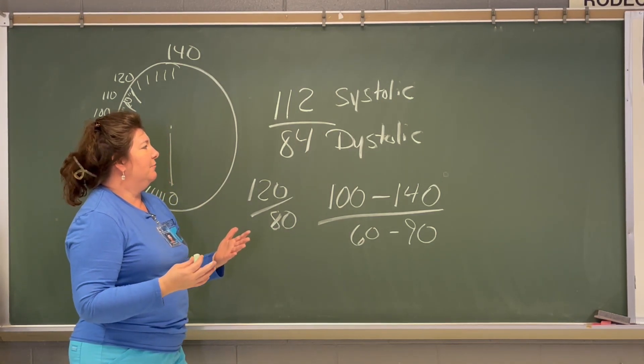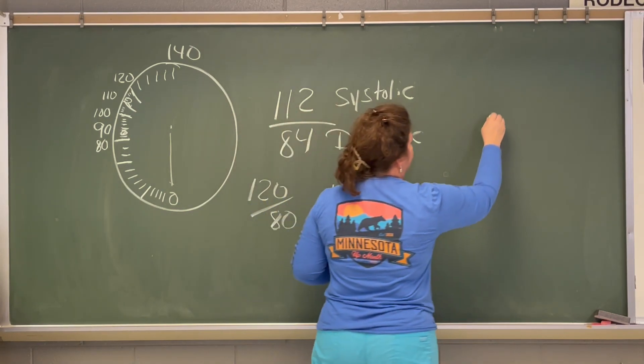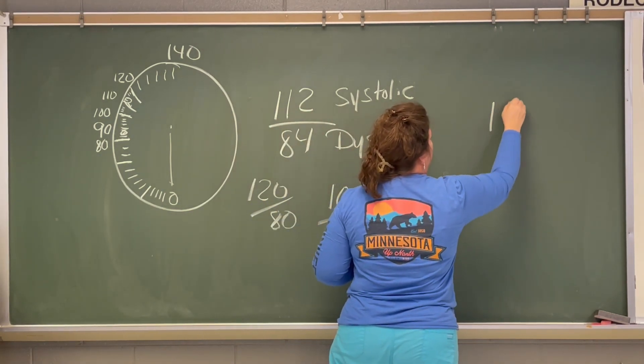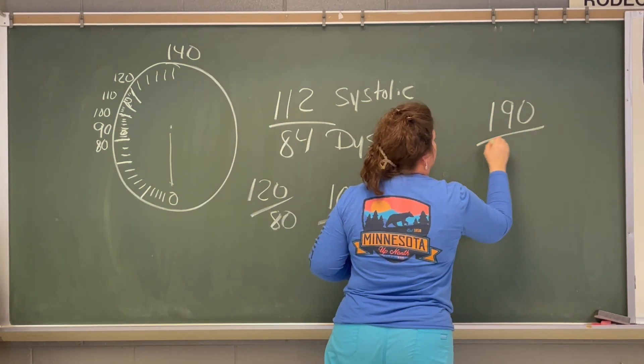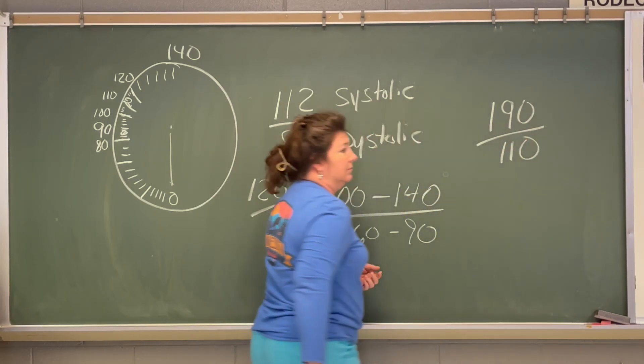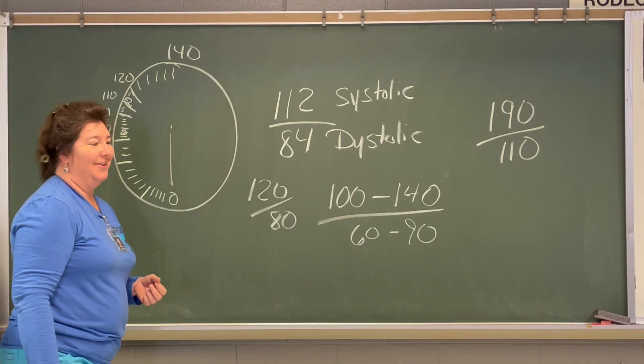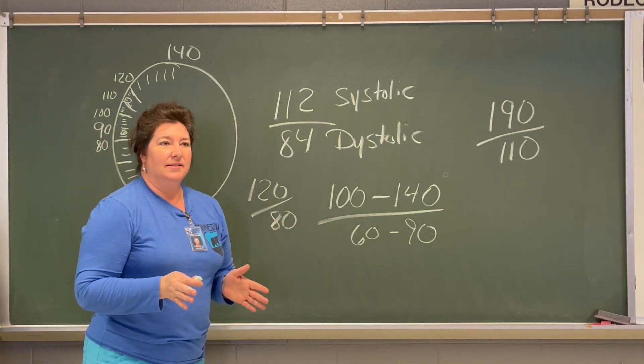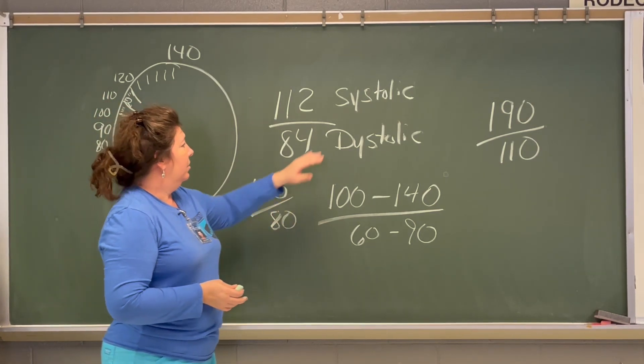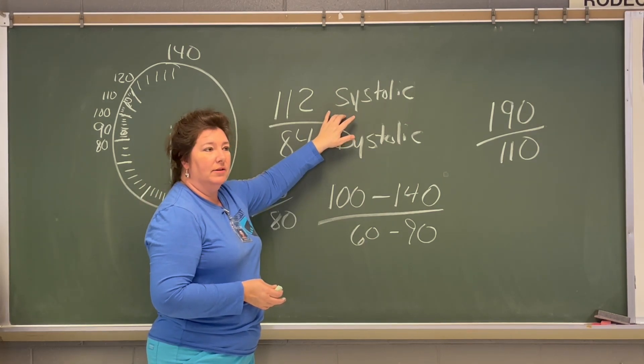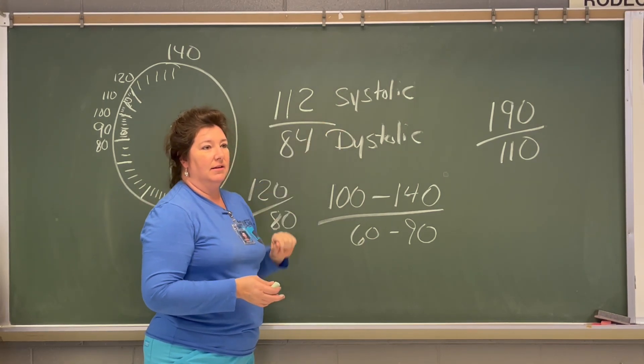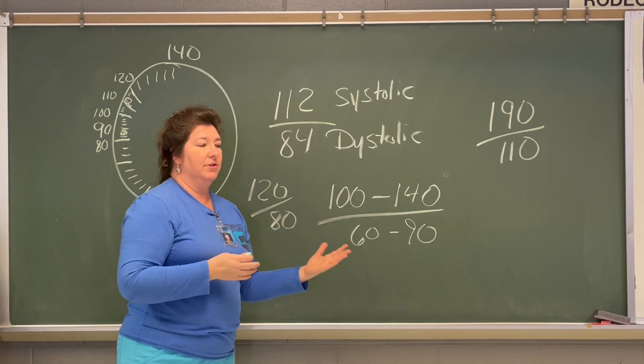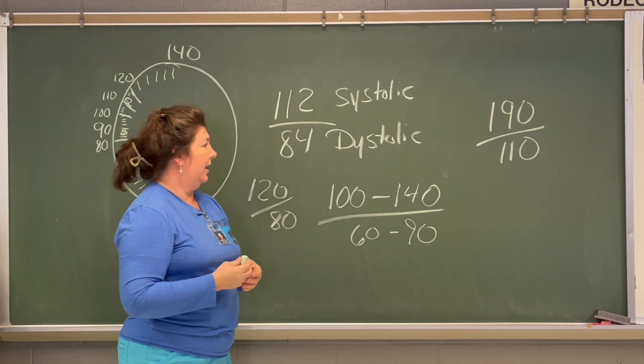So, between 100 and 140 would be the top range. So, does this fall between 100 and 140? Yeah. So, it's fine. This number, the range would be 60 to 90. Does that fall in there? Okay. Now, what happens if your patient is... That's not good. That's not good. Okay. So, that's too high.